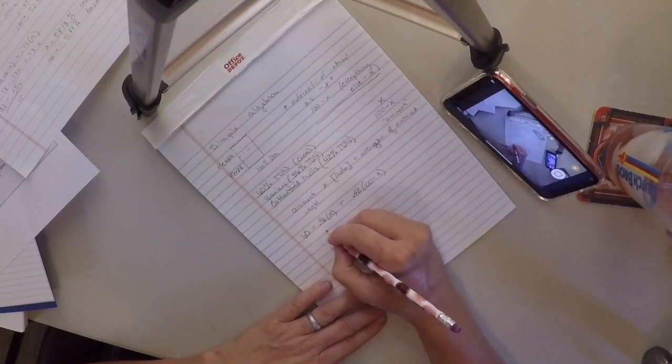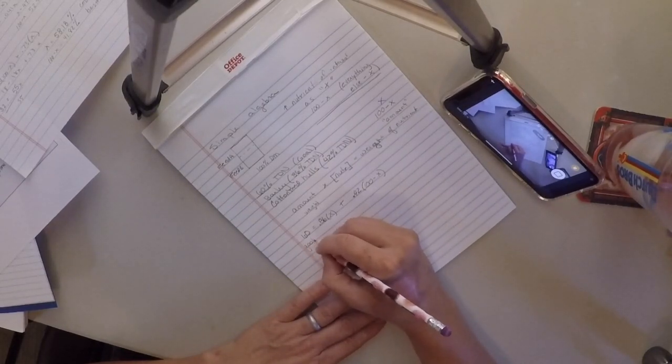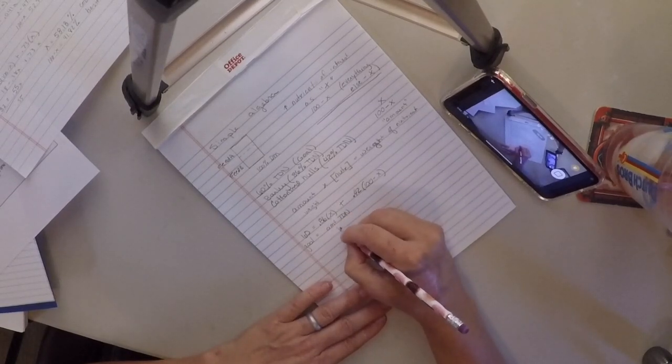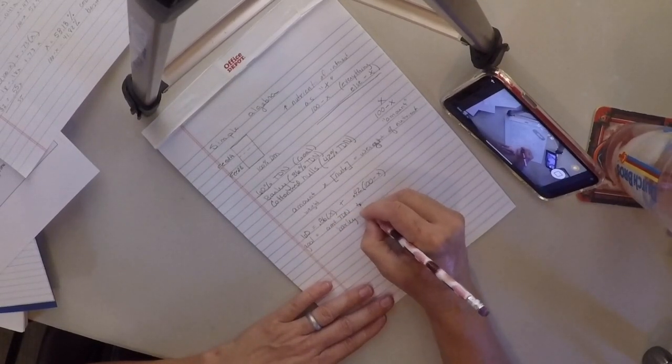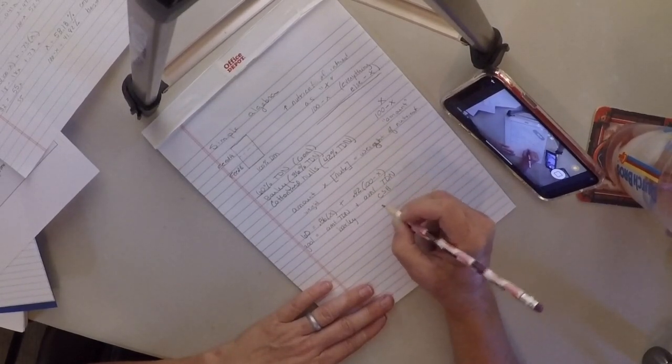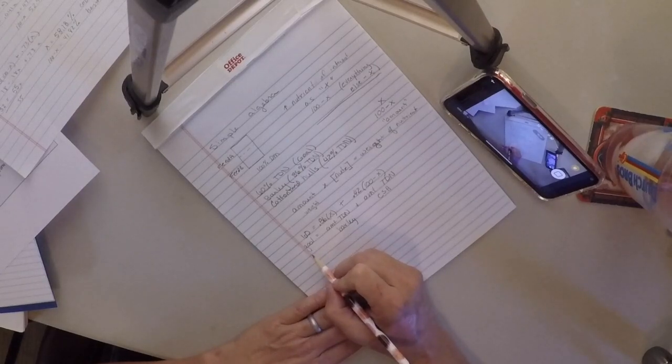So theoretically our goal is right here and it's going to be the amount of TDN from barley plus the amount of TDN from cottonseed hulls are going to equal our goal.